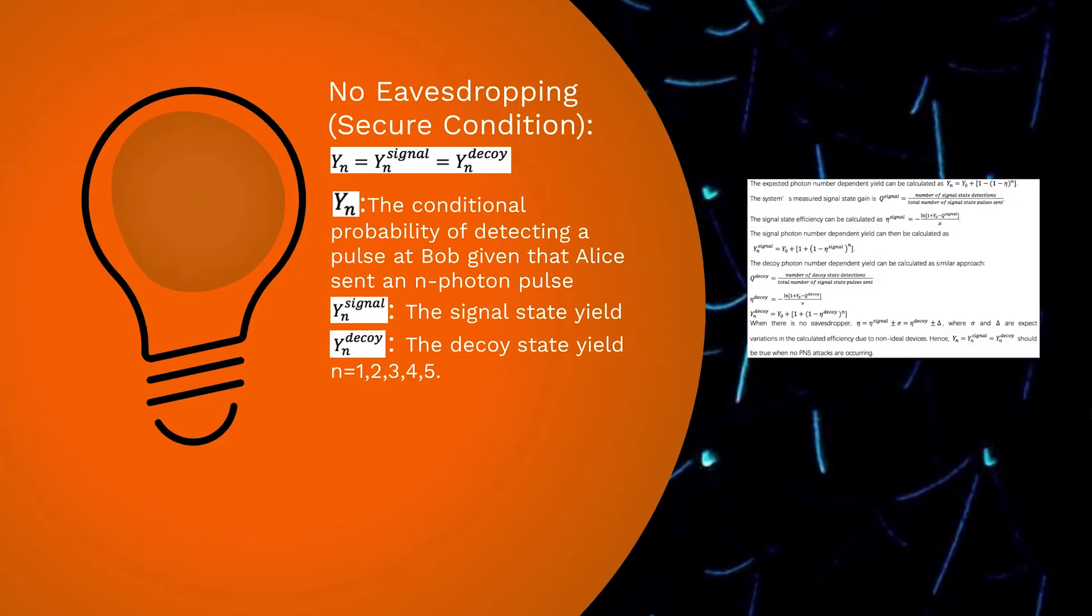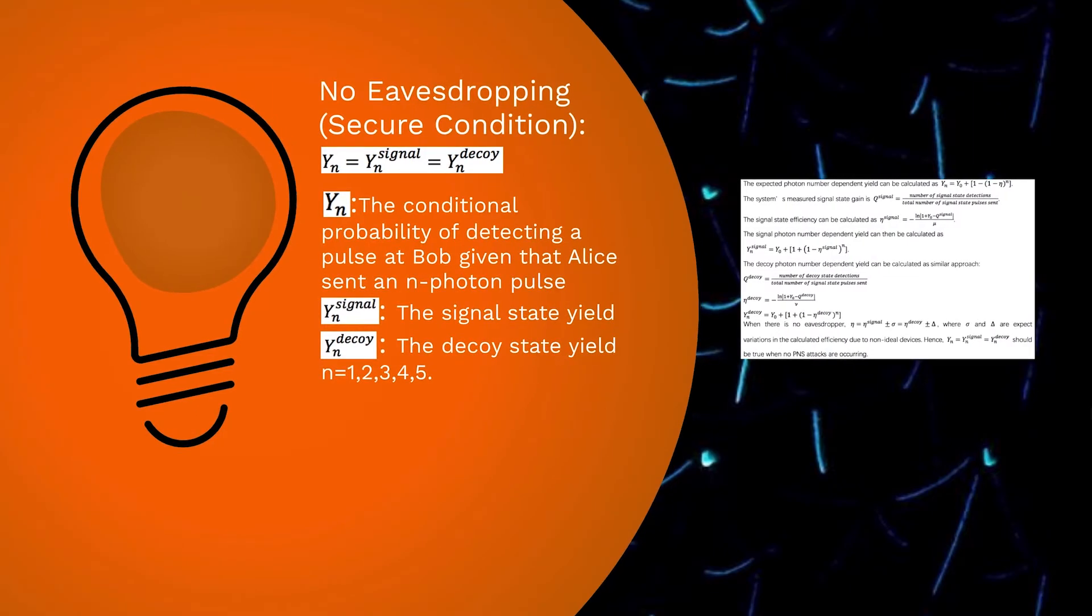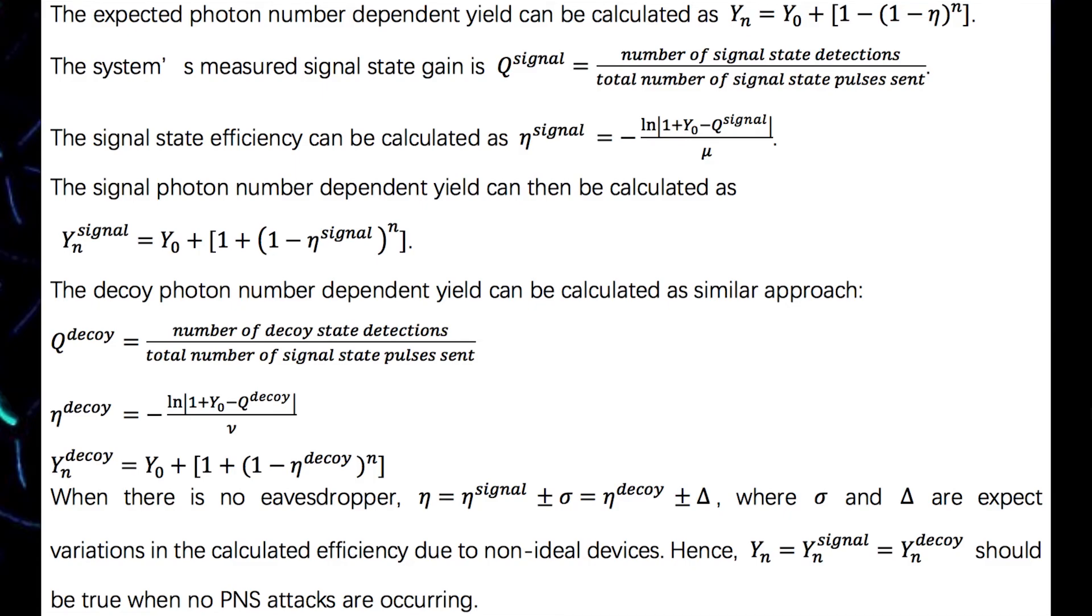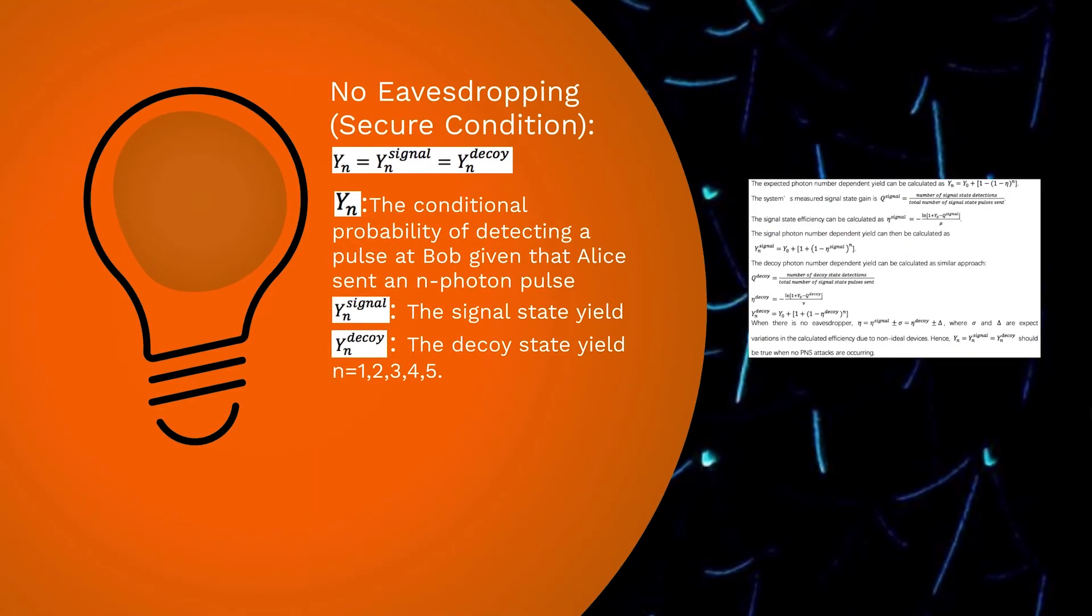Thus, any deviation from the security condition indicates adversary eavesdropping. Here's the detailed calculation. What happens to the beam splitting and photon number splitting attack? In a beam splitting attack, the beam splitter introduces a universal loss on the quantum channel.